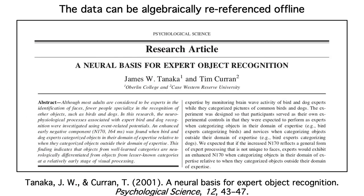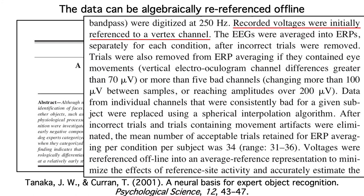Second, you can algebraically re-reference the data offline. That's what this N170 study did. They used an EEG recording system that always uses Cz as the reference during the recording. Cz is also called the vertex electrode because it's on the top of the head. They later re-referenced the data to the average of all the sites, which is a common practice when looking at the N170.